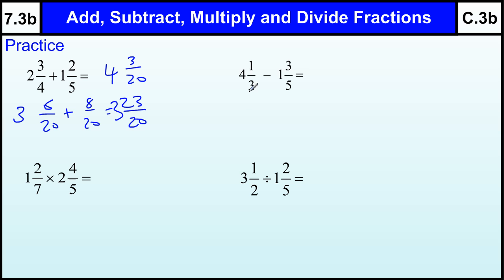Change this to top heavy fraction. So 4 times 3 is 12 plus 1 is 13 thirds. 1 times 5 is 5 plus 3 is 8 fifths. Make them out of 15. 13 times 5 is going to be 65, 3 times 8 is 24. So subtract those we get 41. And then we divide 15 into 41, we get 2 and 11 fifteenths.